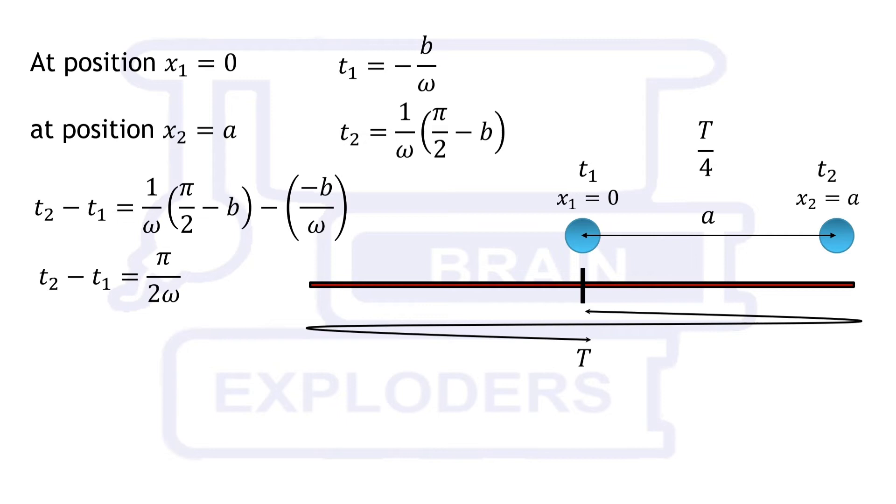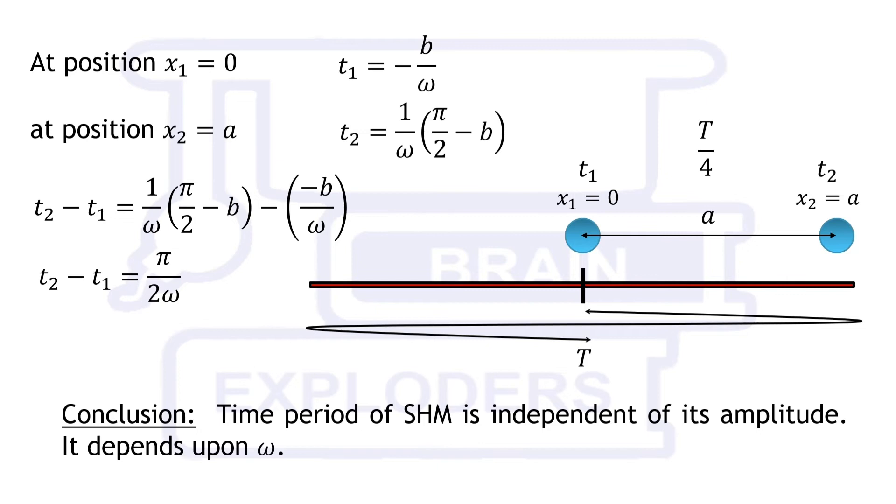Now it is clear that time taken by object to reach extreme position from mean position and also the time period of SHM is independent of its amplitude. So we can use this condition to find the equation of tautochrone curve.